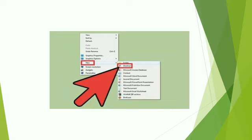Create a Desktop Shortcut. Many a times, you may use certain programs or files very often. Therefore, you would like to open them quickly and easily. You can do this by creating a shortcut icon for them and placing them on the desktop.